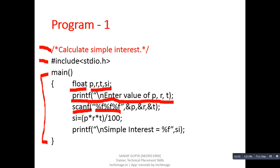These three %f format specifiers indicate that the user will be providing three float type values. There are three variables — P, R, and T — which will receive the entered values from the user. To calculate simple interest, we are using the formula P into R into T upon 100. The result will be stored inside SI.